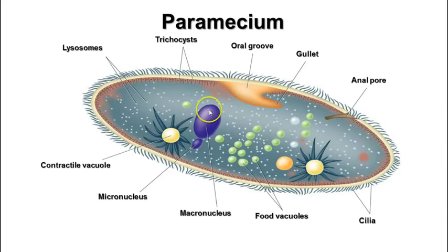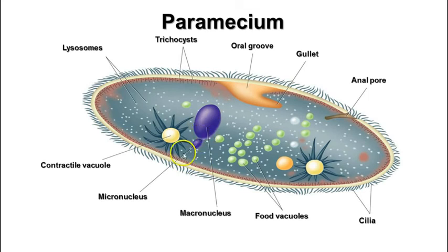There are two nuclei in the paramecium: a macronucleus and a micronucleus. The micronucleus is kind of like the reserved copy of all the genes. The macronucleus has multiple copies of the chromosomes and is the working copy. These are single-celled organisms that have to do everything in one cell, so it makes sense that they would need multiple copies of the genes in order to do all those different jobs.